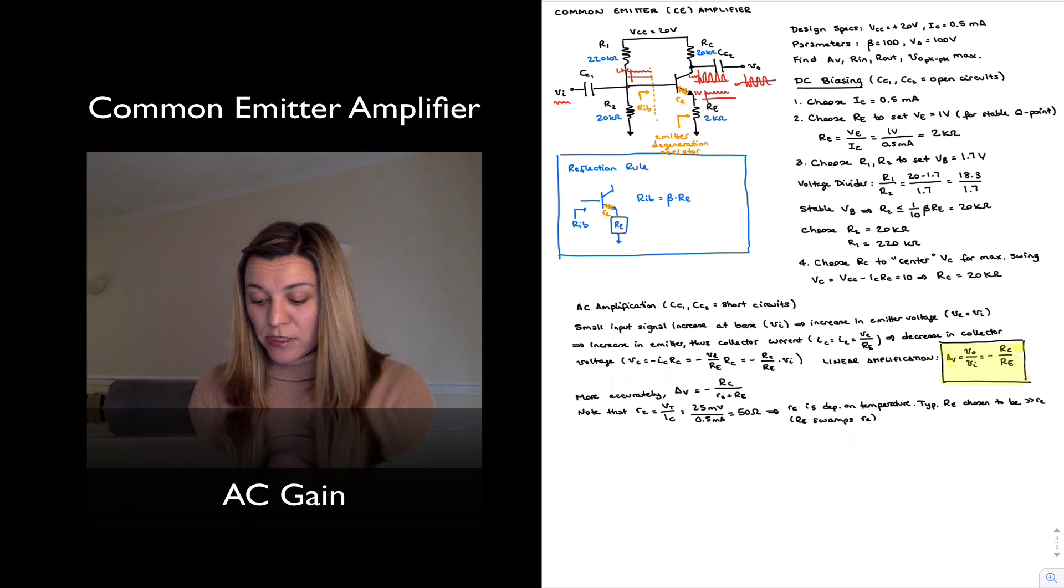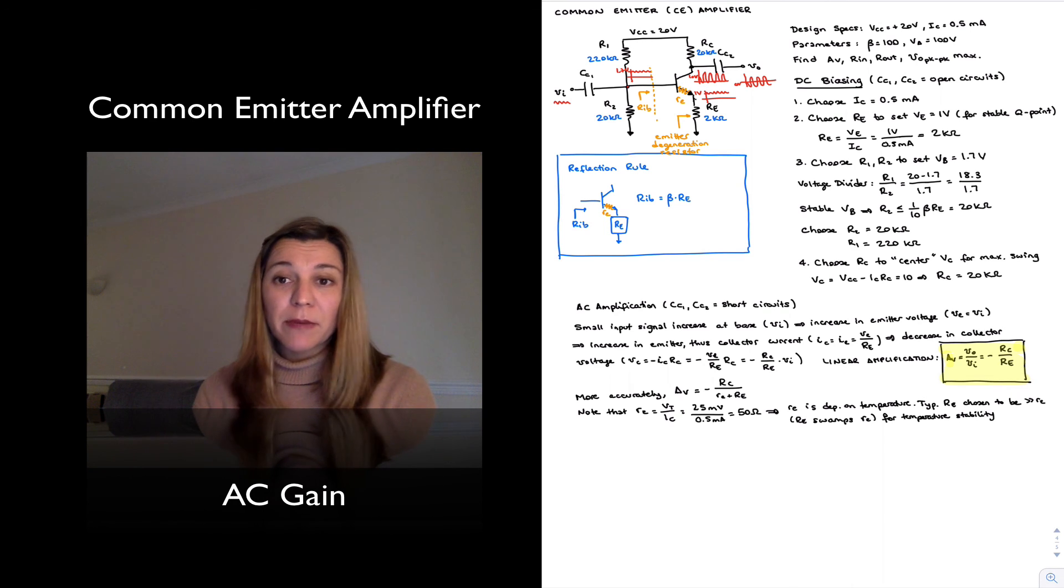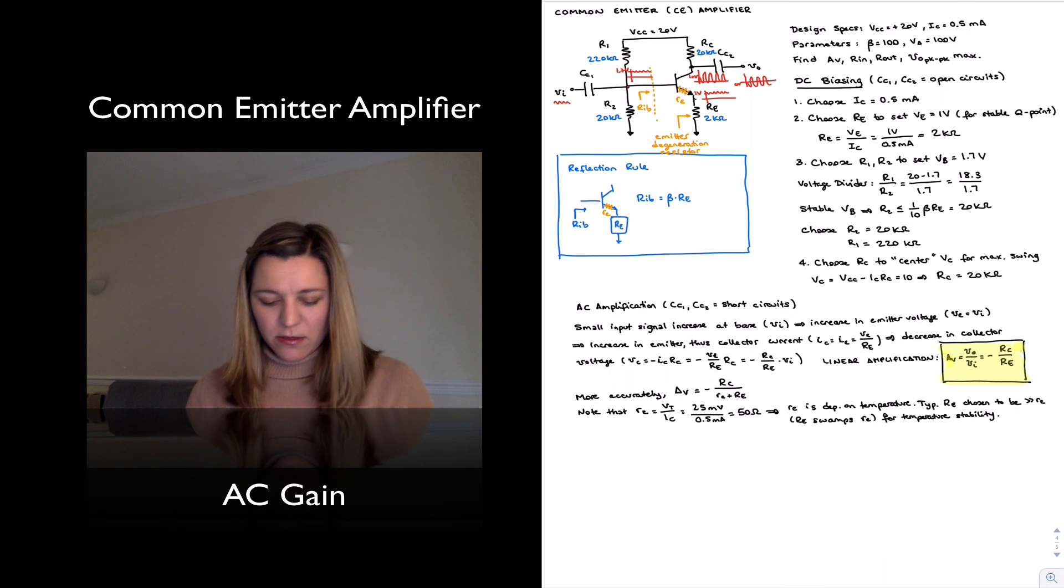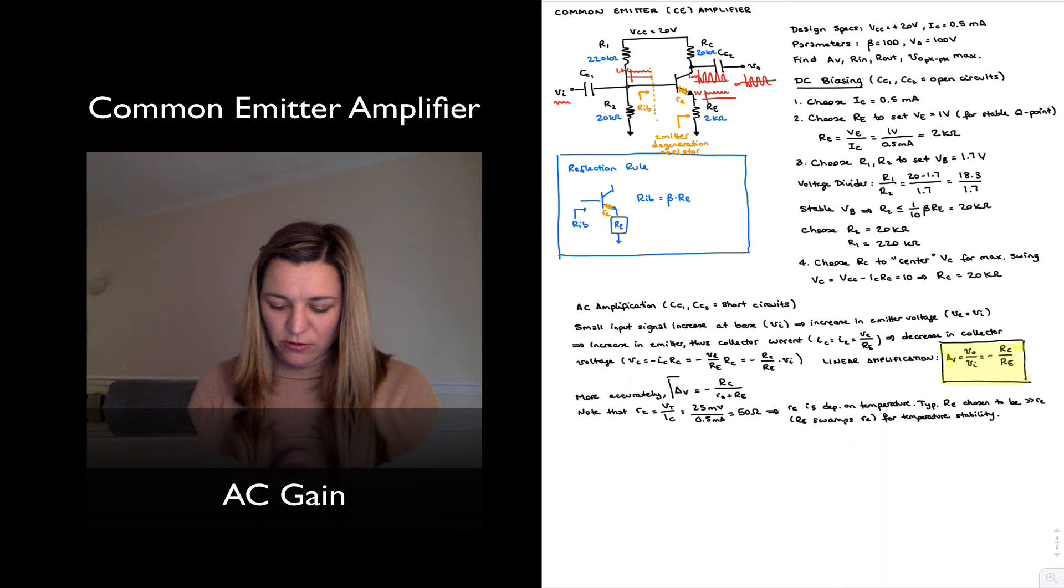And that's just for temperature stability for our circuit. Meaning, it makes the series combination of the two approximately equal to big RE. And so we eliminate, or we minimize, the temperature dependency. Okay, and that's it. This will be the more accurate expression for our gain.